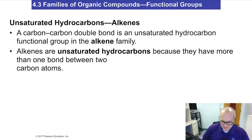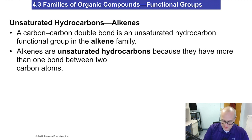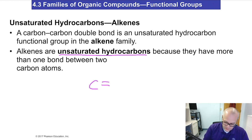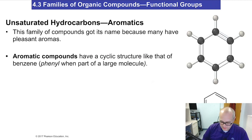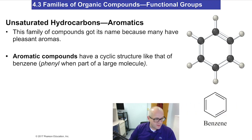Unsaturated hydrocarbons — alkenes. We've already talked a little bit about alkenes, but let's write some notes. A carbon-carbon double bond is an unsaturated hydrocarbon functionality known as the alkene. They are unsaturated hydrocarbons because they have more than one bond between two carbon atoms. Or a triple bond — but we usually just focus on the carbon-carbon double bond. These are the aromatics — named supposedly because they have a pleasant smell.